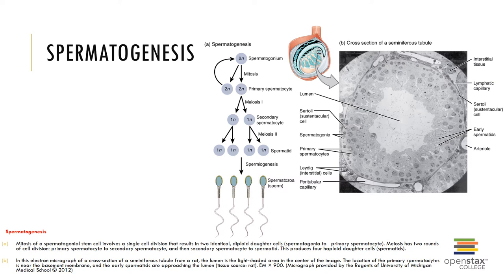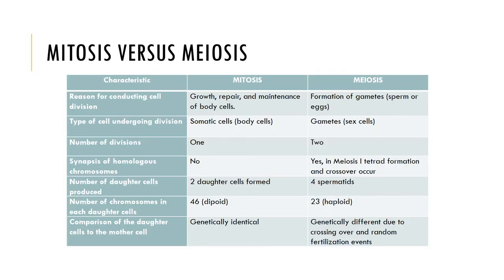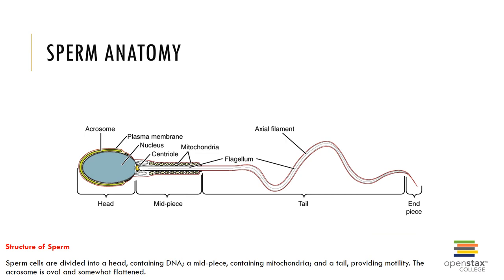The midpiece contains the mitochondria arranged in a spiral around the microtubules; mitochondrial activity provides the ATP required to move the tail. The tail is the flagellum, or whip-like organelle used to move the sperm. The next slides compare meiosis and mitosis of spermatogenesis, and this slide shows the structure of the sperm — the head, midpiece, and tail.